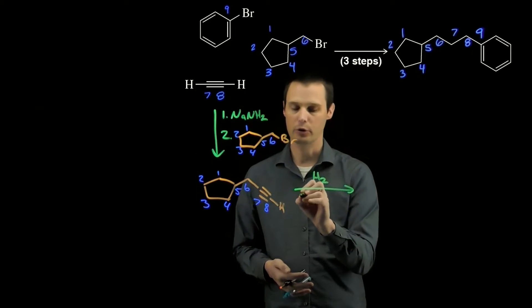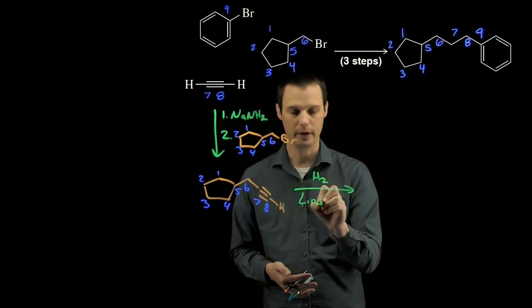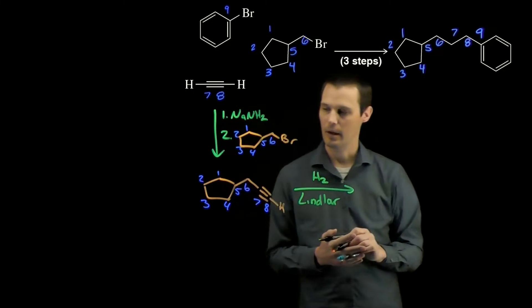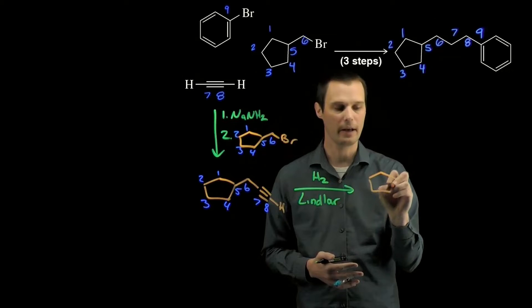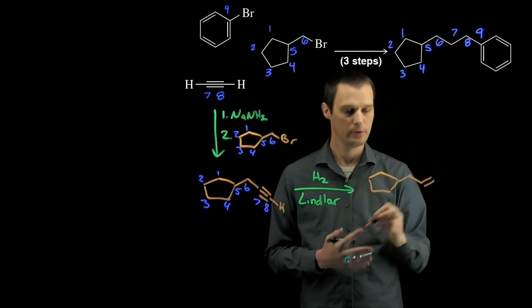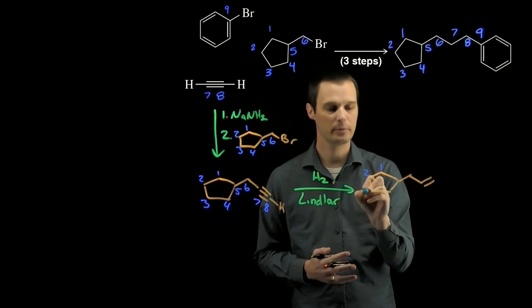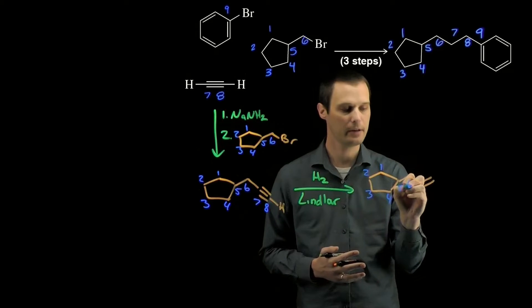So our second step will be a partial reduction of the alkyne. We can use either partial reduction. Here I'll choose H2 and Lindlar's catalyst. That will do a partial reduction of the alkyne to an alkene. Again, we'll bring our carbon numbers back to make sure we don't drop or add any carbons.